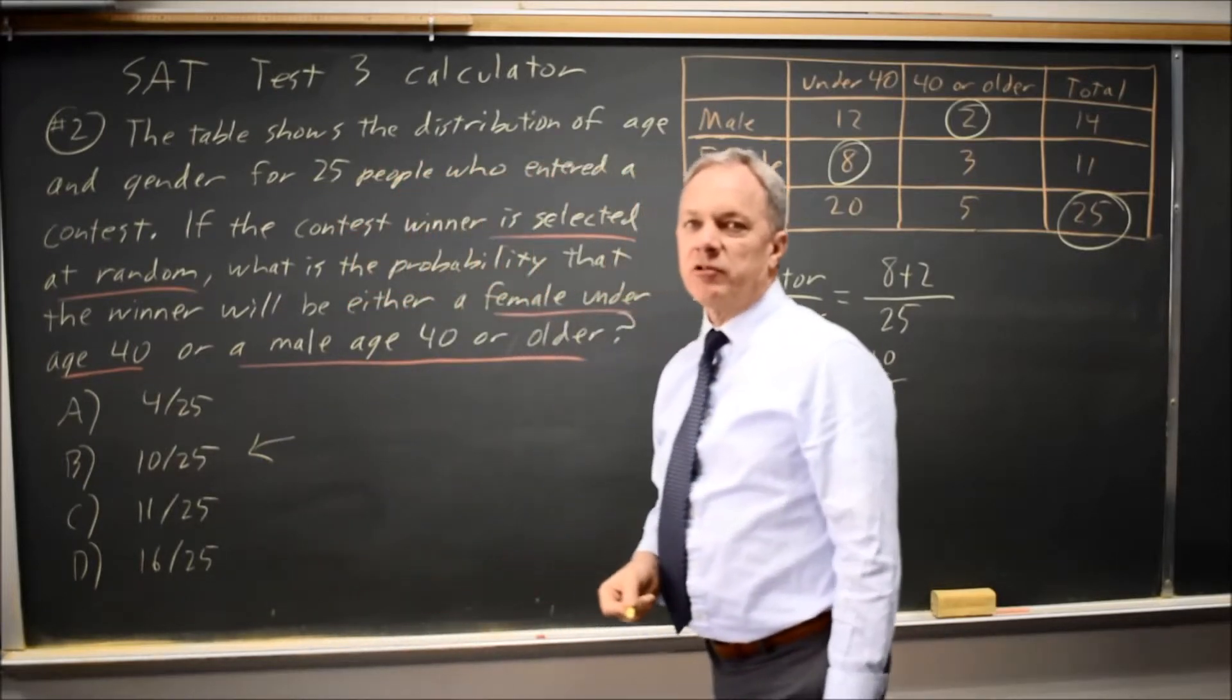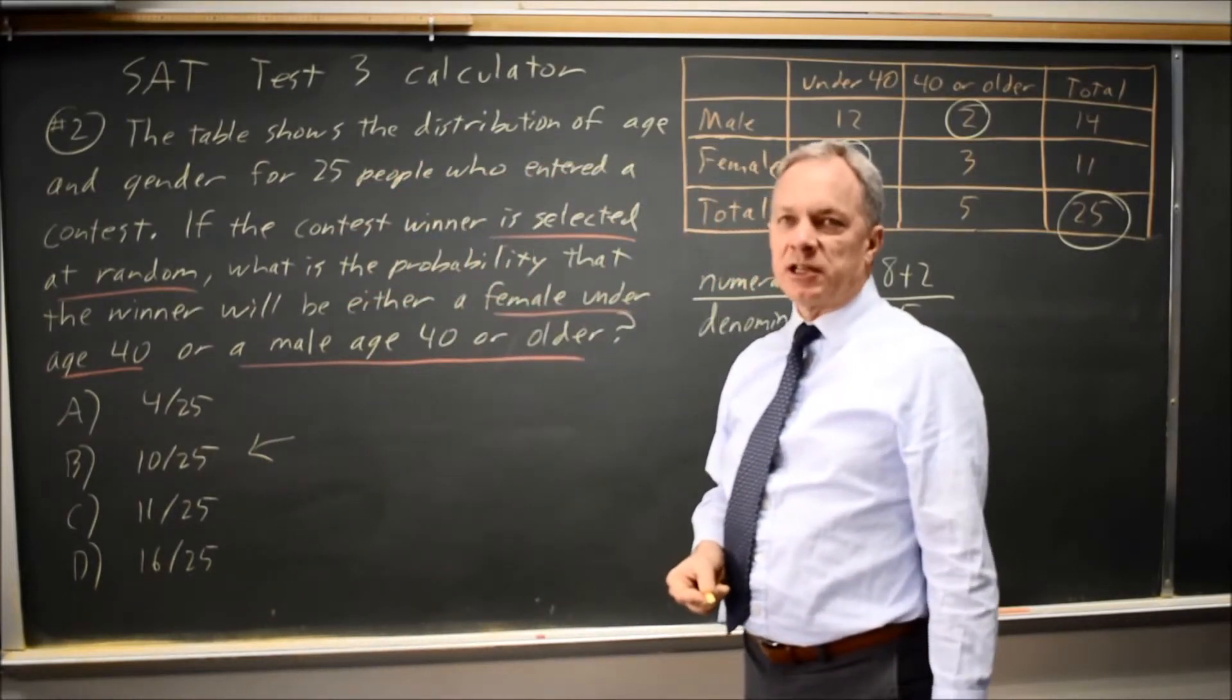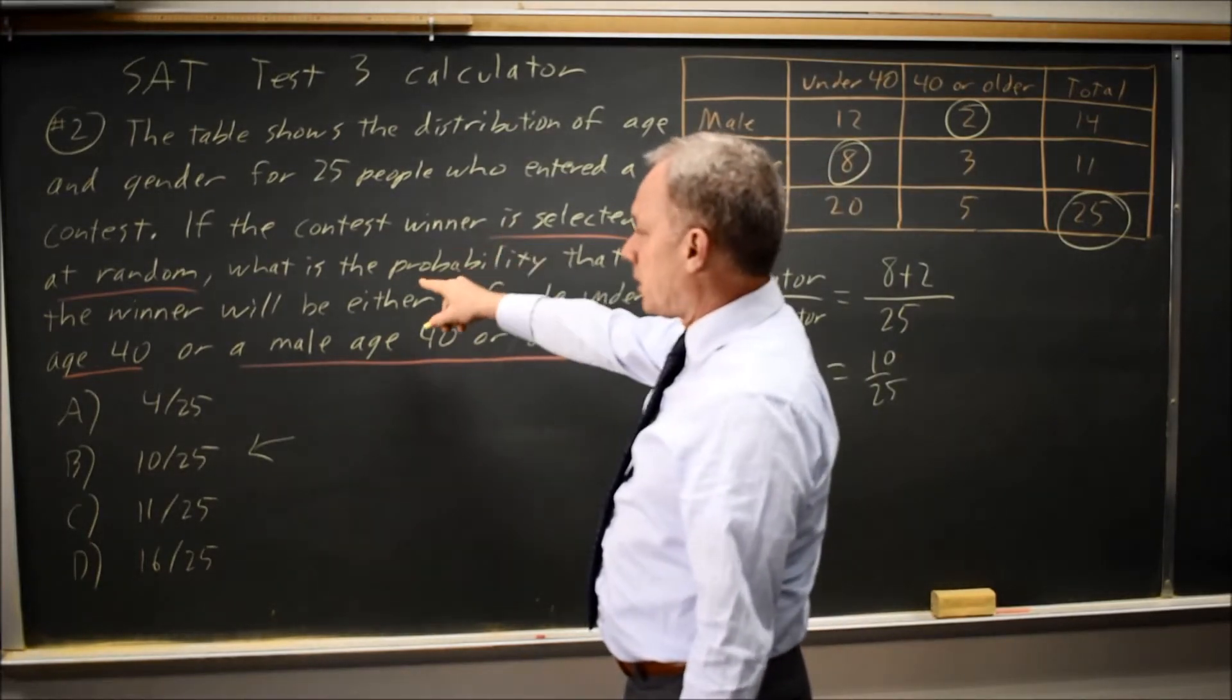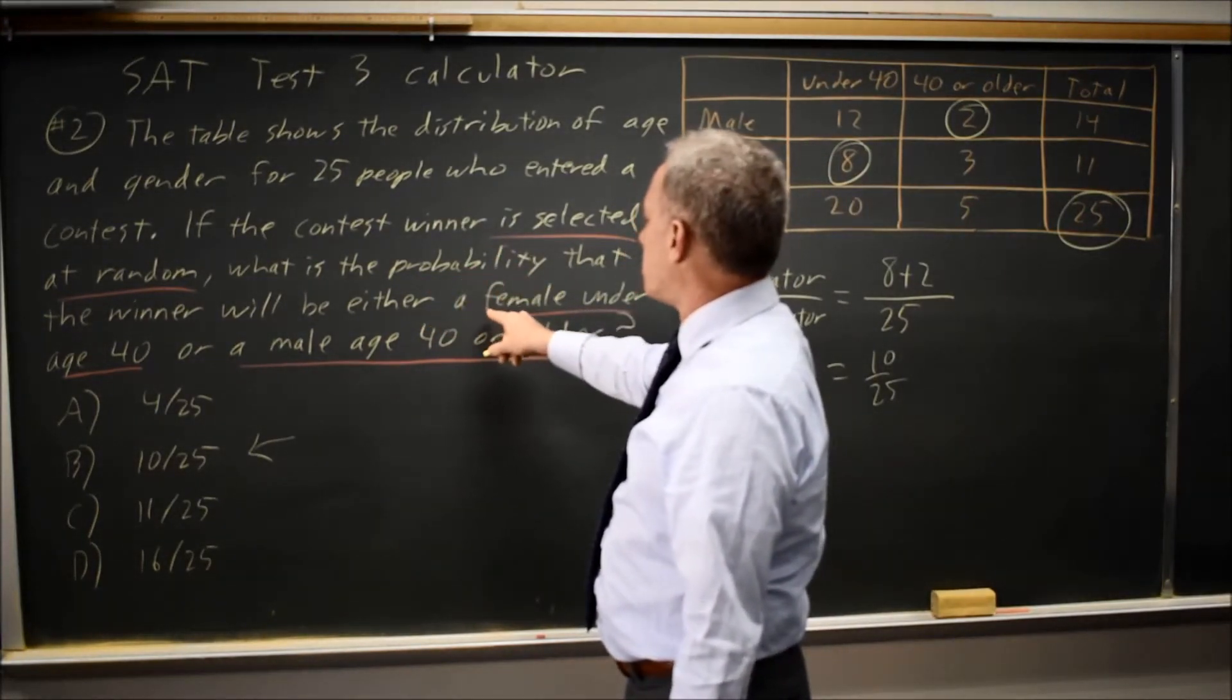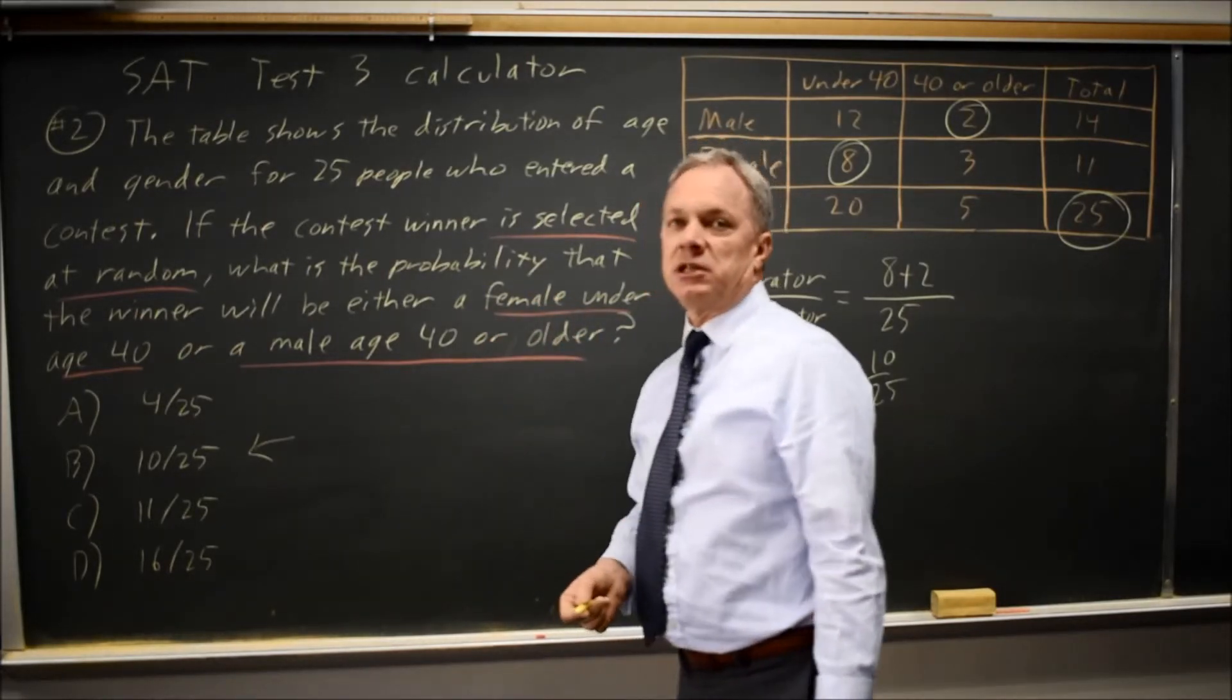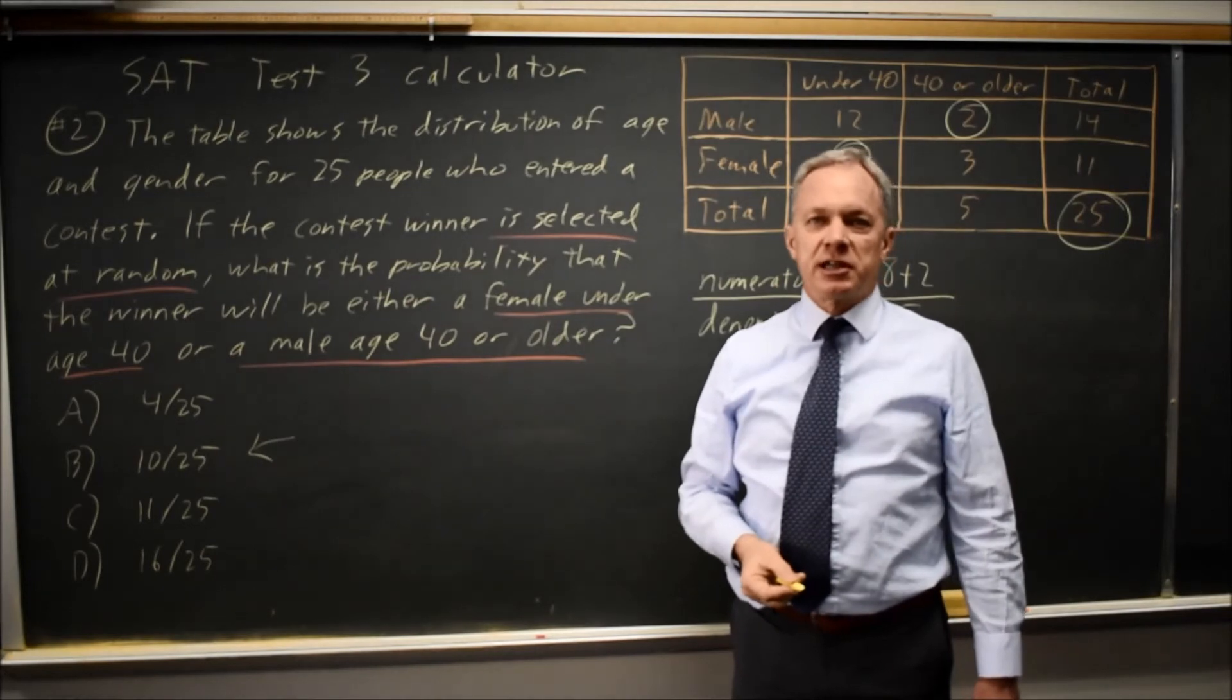I strongly recommend rereading the question to make sure your answer answers their question, and they were saying if the winner is selected at random with no restrictions, what's the probability that the winner is either female under 40 or male 40 or older, and that is what we did. So choice B is the correct answer.